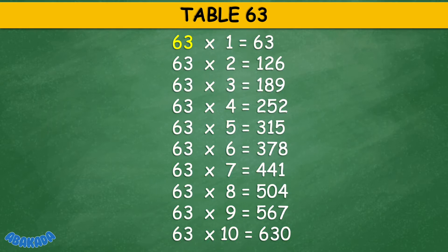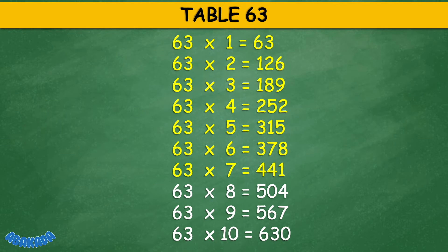Table 63: 63 times 1 equals 63, 63 times 2 equals 126, 63 times 3 equals 189, 63 times 4 equals 252, 63 times 5 equals 315, 63 times 6 equals 378, 63 times 7 equals 441, 63 times 8 equals 504, 63 times 9 equals 567, 63 times 10 equals 630.